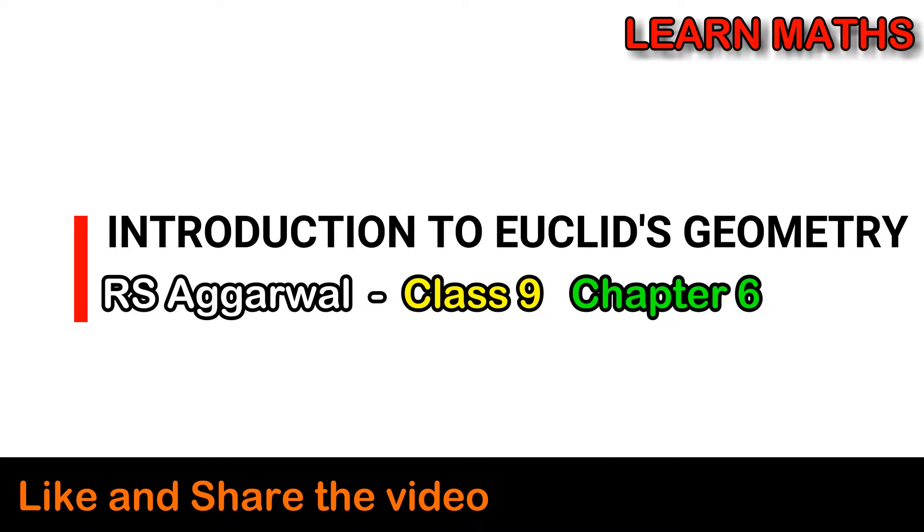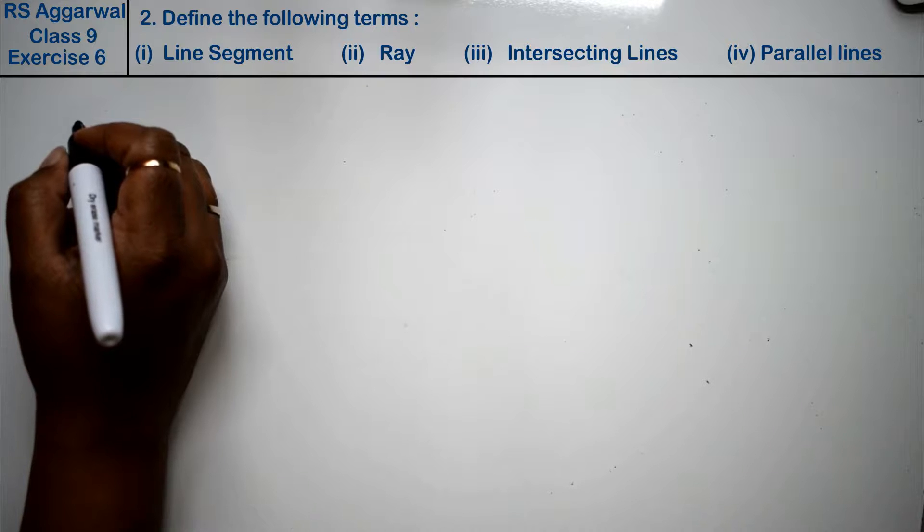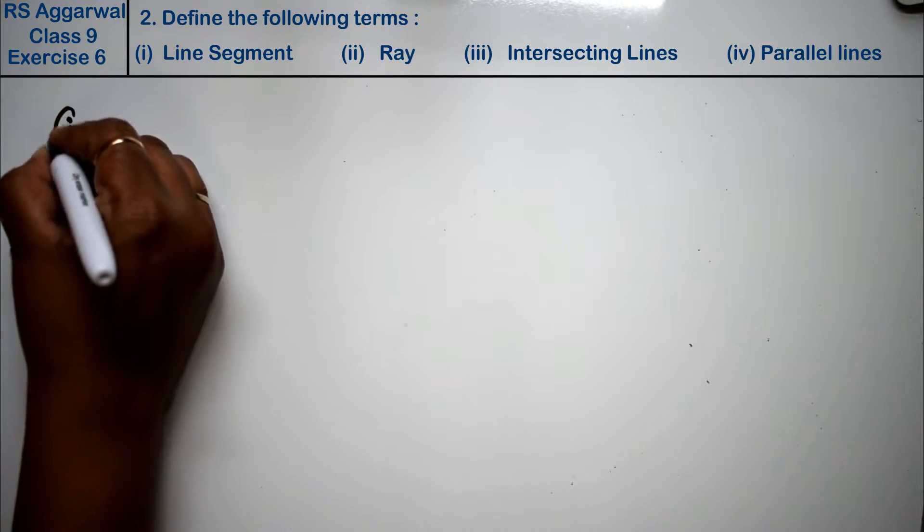Let's do question number 2 of Exercise 6. That is introduction to Euclid geometry. Question number 2 is define the following statement. First is line segment.